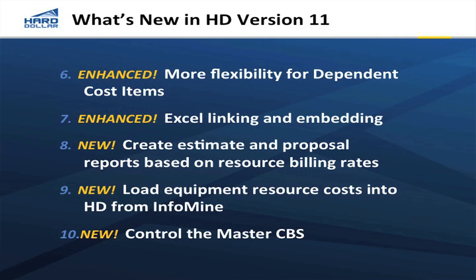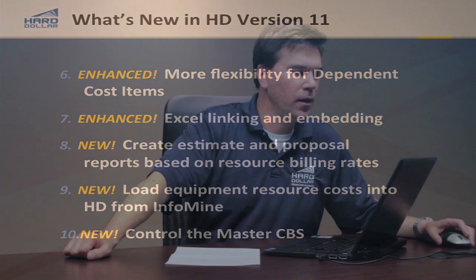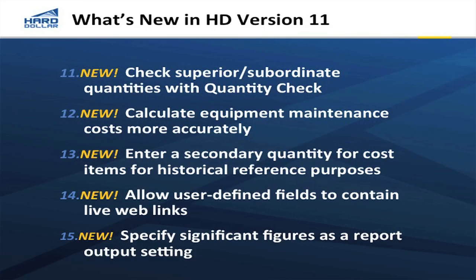We have a lot of new capabilities around our master cost breakdown structure. You can control which items are going to come into every new project automatically — certain overheads, indirects, or dependencies that you want to populate into every new job automatically. We also have the ability to do quantity checks. As we look up and down the work breakdown structure or cost breakdown structure, we can check for quantities that should add up — checking that subordinate quantities add up to the total, to make sure it's functioning the way you would like.